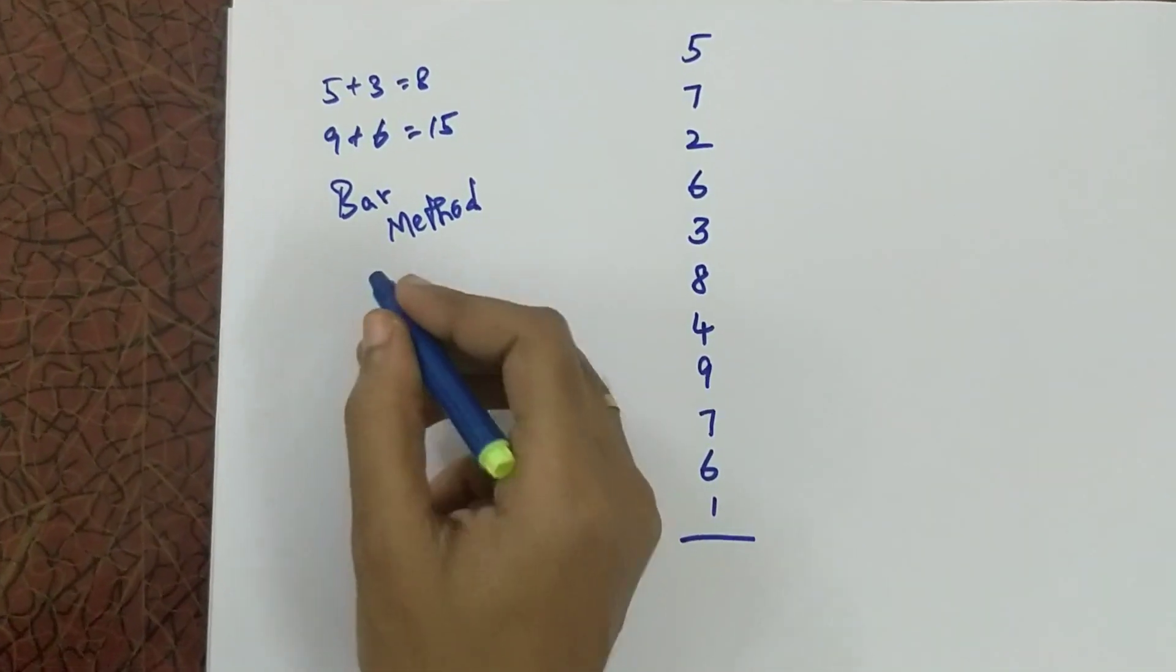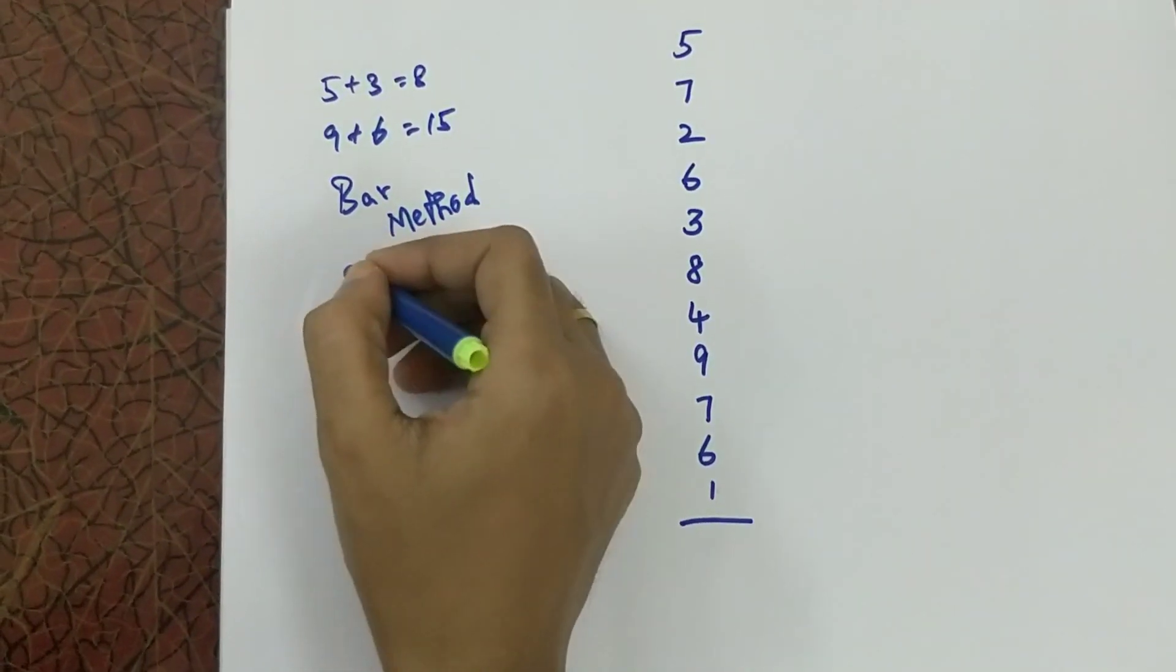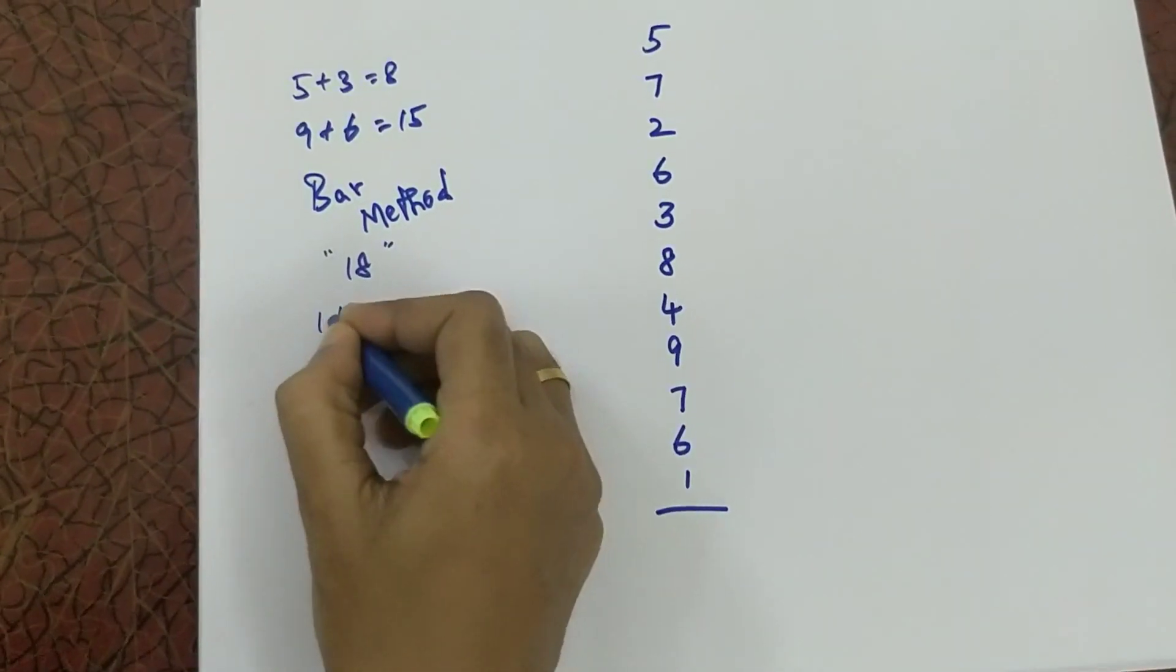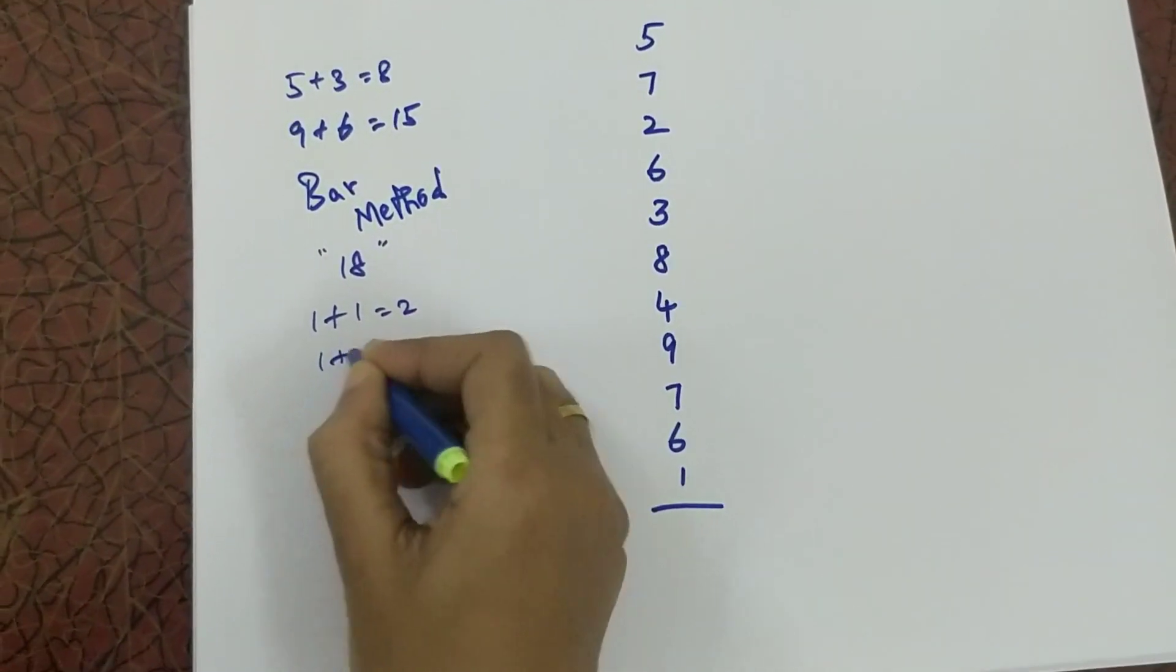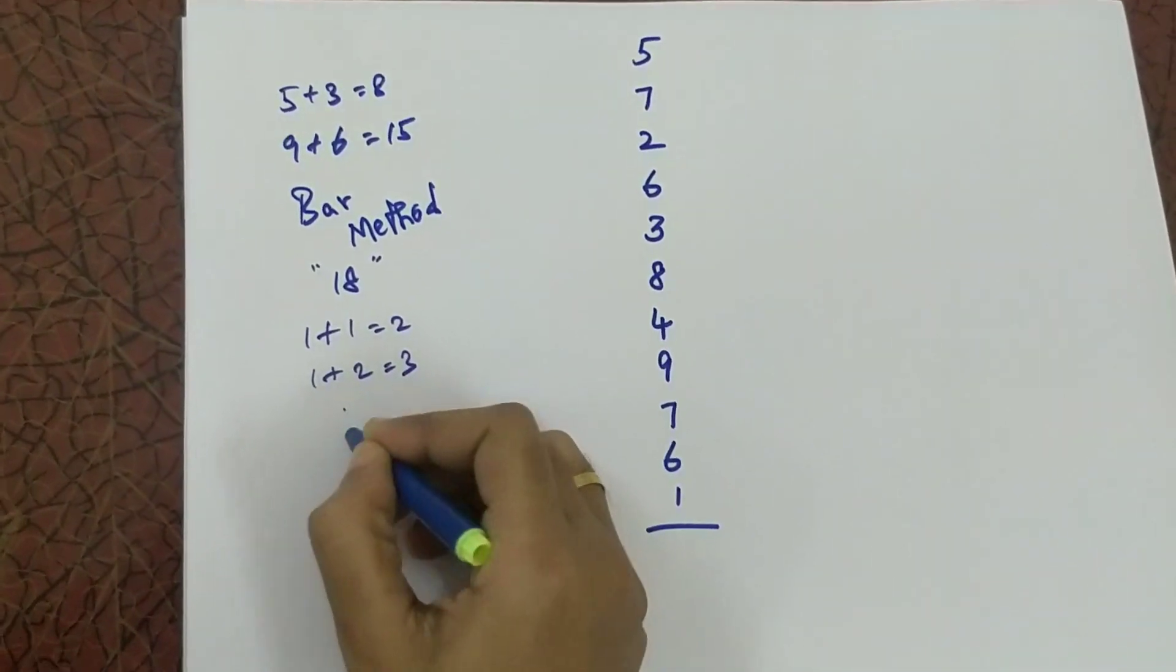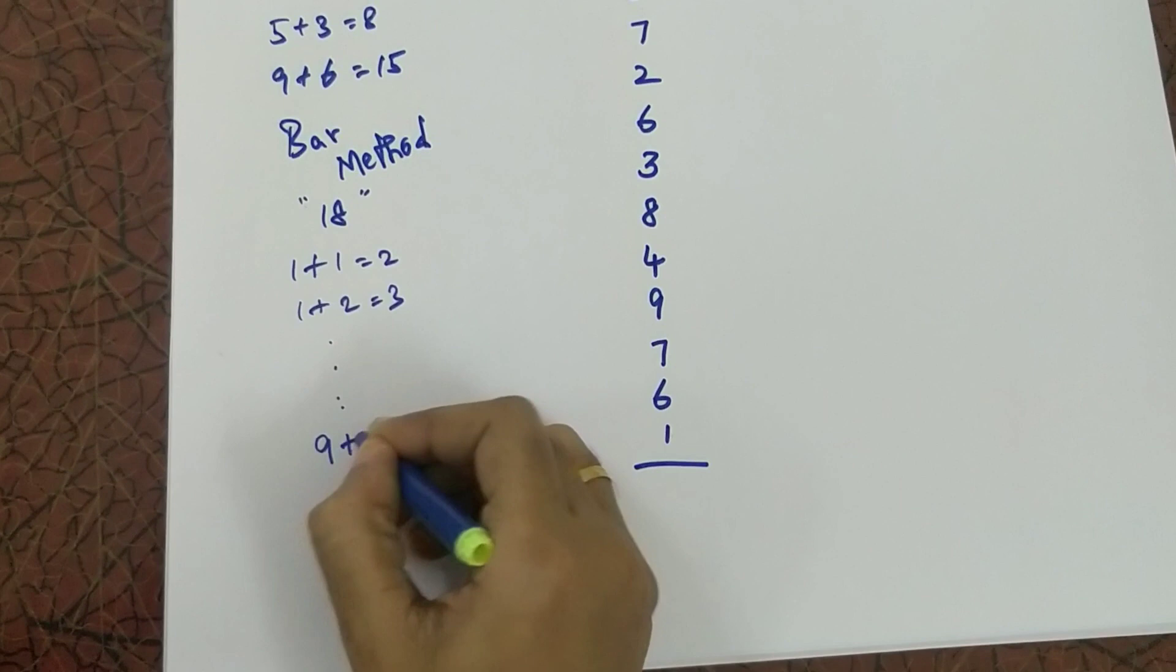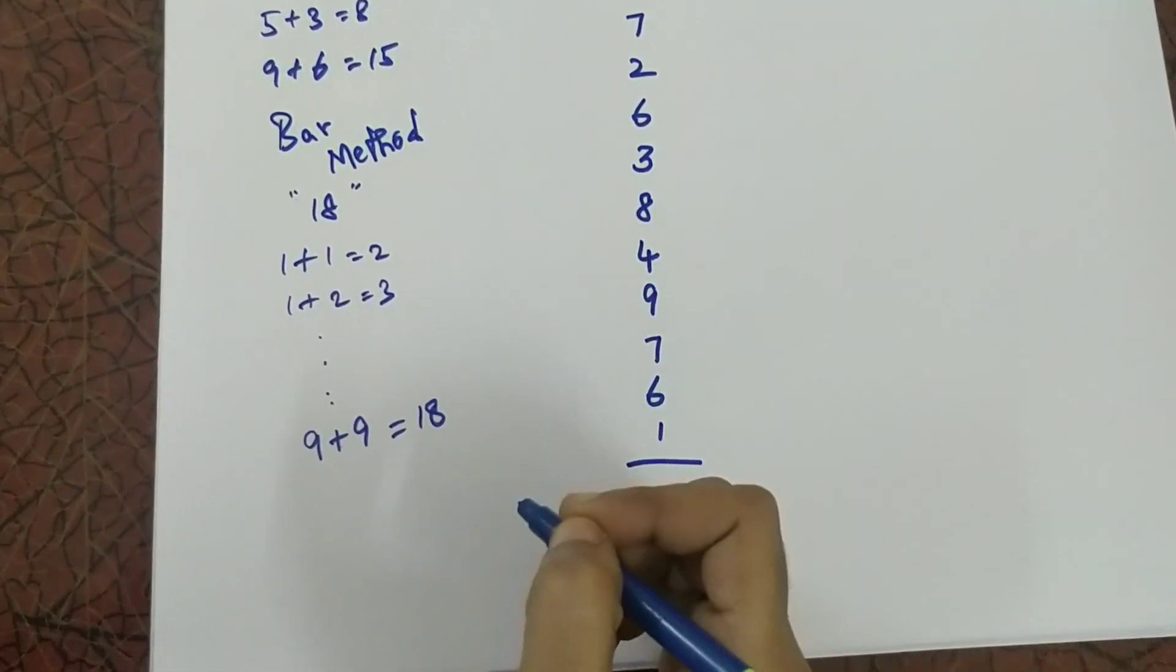By adding two single digit numbers the maximum number you will get is 18. If you add 1 plus 1, 2, 1 plus 2, 3. Likewise if you go the maximum single digit number is 9, 9 plus 9 you will get answer as 18.